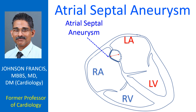Atrial septal aneurysm is an aneurysmal portion in the region of the fossa ovalis with a diameter of at least 1.5 cm, having movement amplitude of at least 1.5 cm or protrusion of at least 1.5 cm — per Hanley's criteria. It is often associated with a patent foramen ovale.